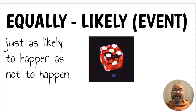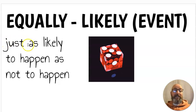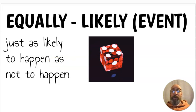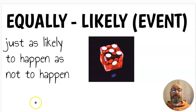Our first word is equally likely event, which means just as likely to happen as not to happen. If I were to roll a dice, I have the same chance of rolling any number — one, two, three, four, five, six. So that would be an equally likely event: just as likely to happen as not to happen.